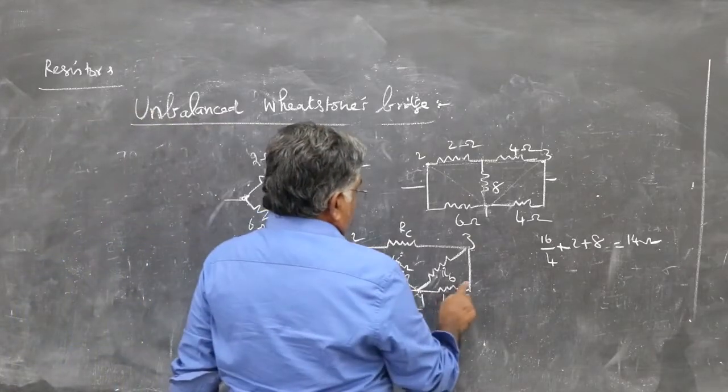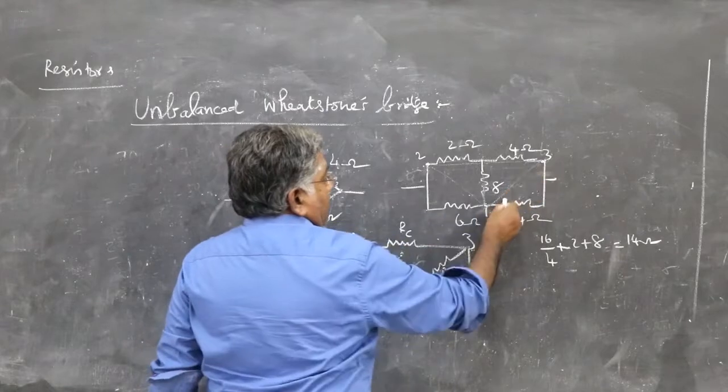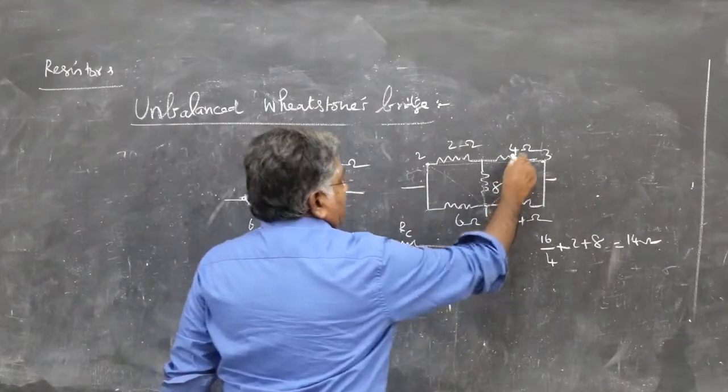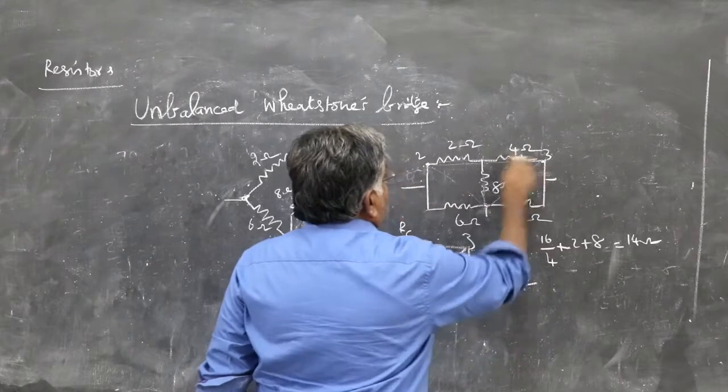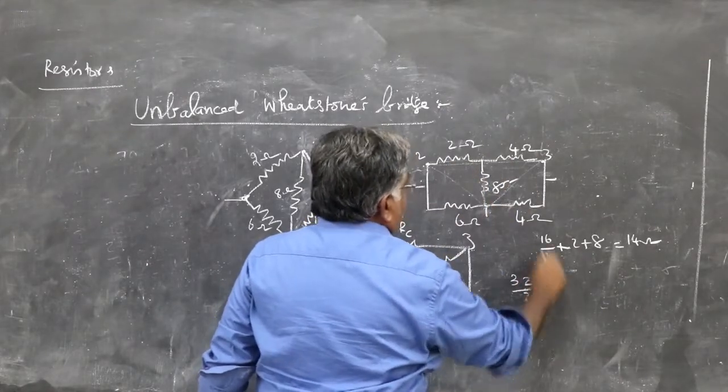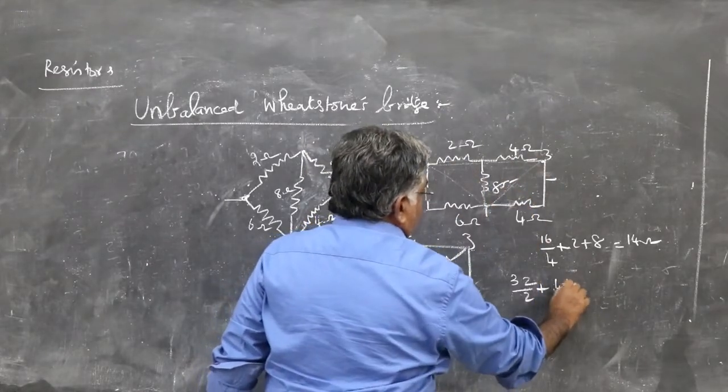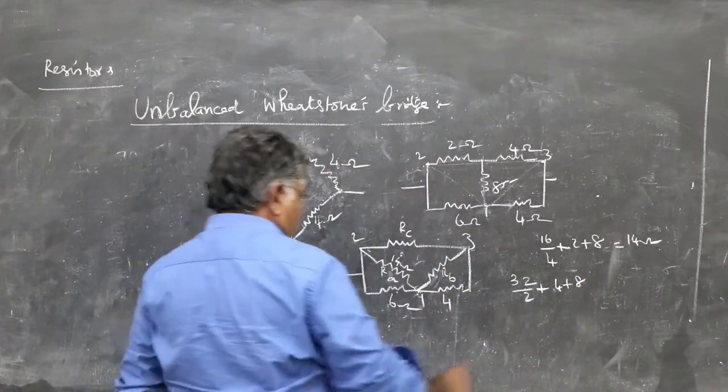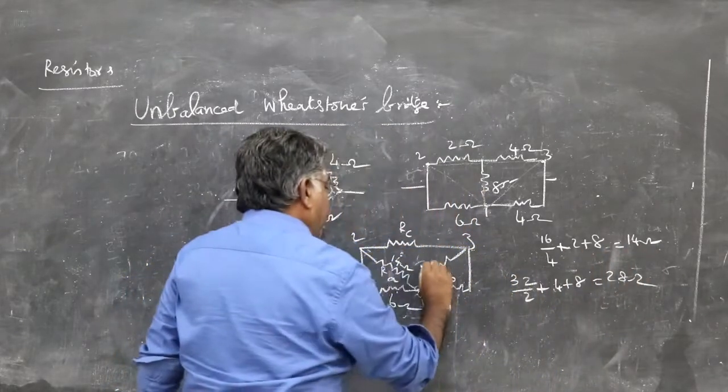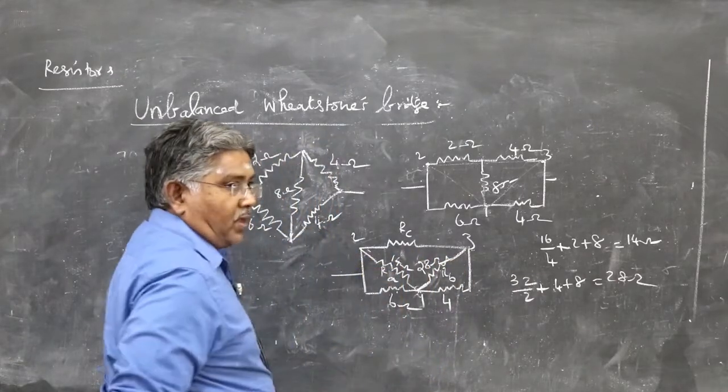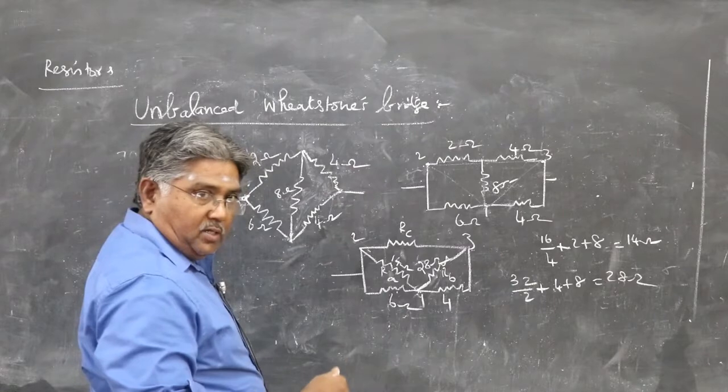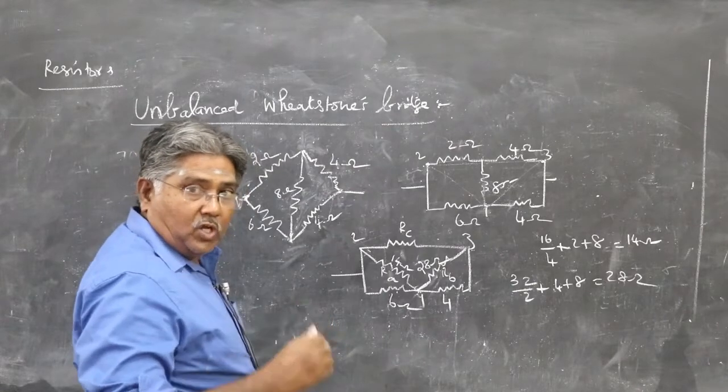Similarly, this one, RB, product of these two. This is also 8 ohm. 32 by this opposite resistance: plus 4 plus 8, so 28 ohm. So RB is 28 ohm, this is 14 ohm. We are converting from star to delta.